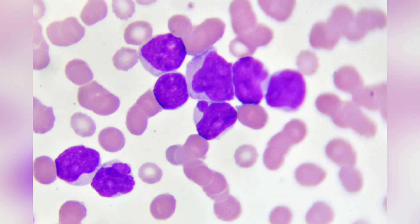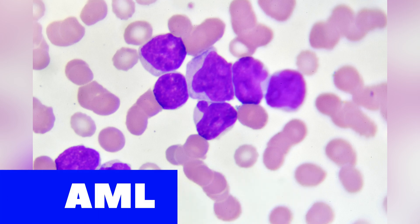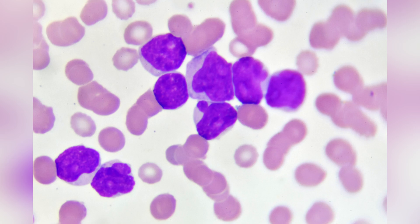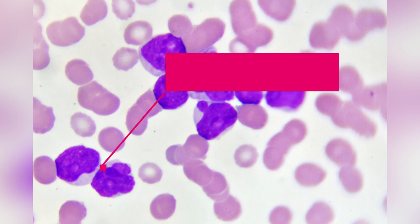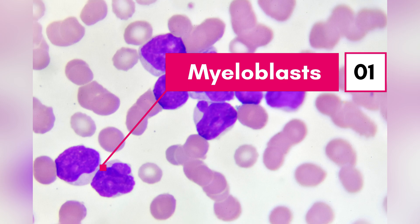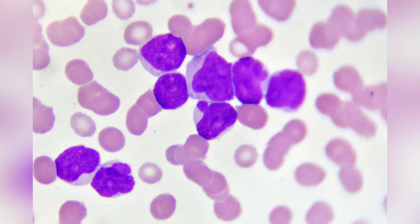Let's start with AML, or acute myeloid leukemia. AML is a type of leukemia that can develop rapidly and aggressively. It occurs when the bone marrow produces abnormal myeloid cells, which are a type of white blood cells. These abnormal cells build up in the bone marrow, preventing the production of normal blood cells.